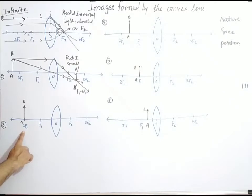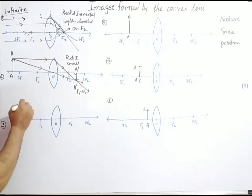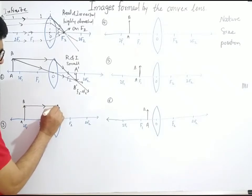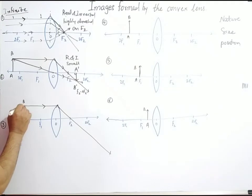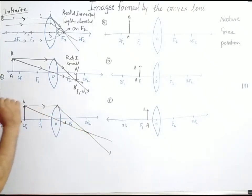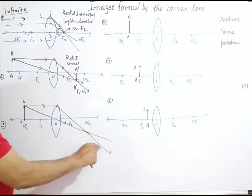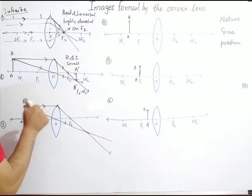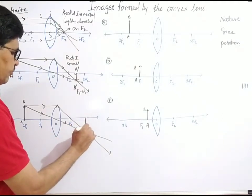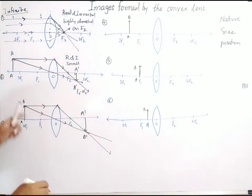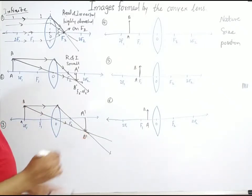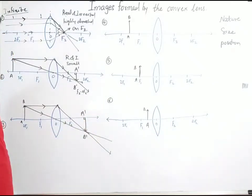Next, object is placed on 2F. Again, two rays are considered. The first ray is parallel to the principal axis; after refraction, it passes through the focus. The second ray passes through the optical center without any deviation after refraction. Where they meet, from the intersecting point toward the principal axis, the image of the object is formed. The intersection image of point B is B', and from the intersecting point within the perpendicular distance, the image is formed.